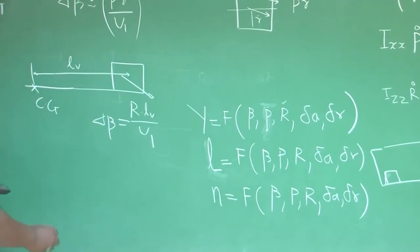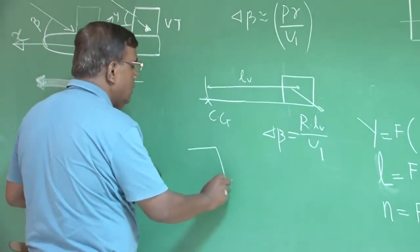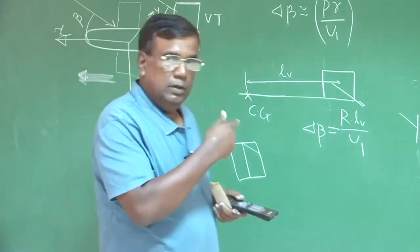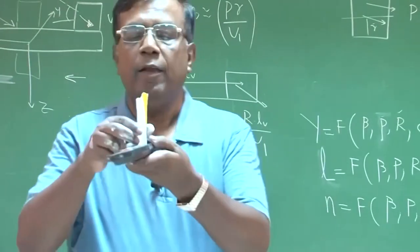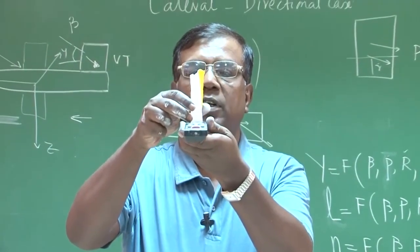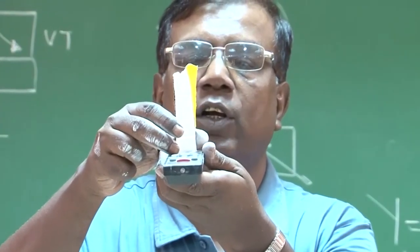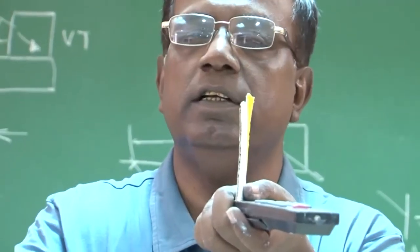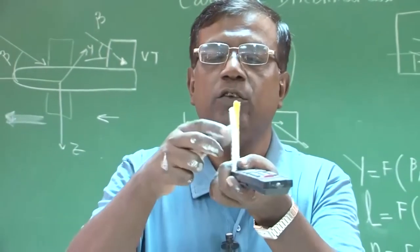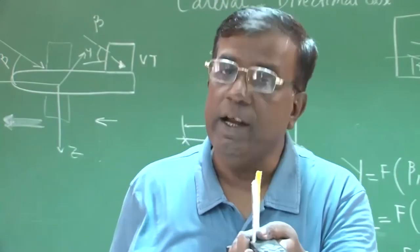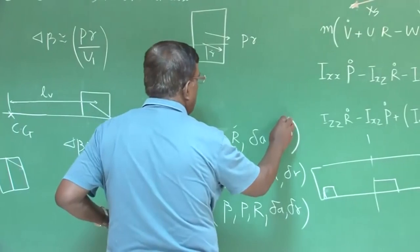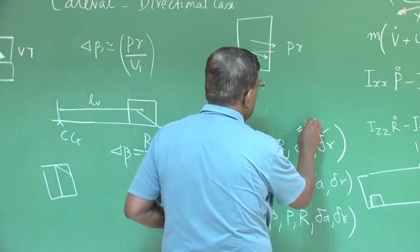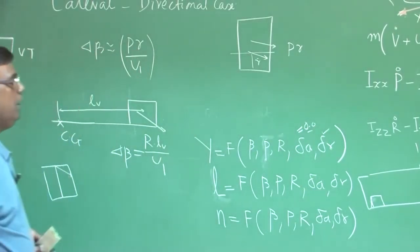Regarding rudder deflection delta_r: if the rudder is positively deflected toward the left, as the aircraft moves forward there will be a force in the positive y direction. So positive delta_r causes a side force in the positive y direction. Aileron deflection delta_a will be assumed, as a first approximation, to contribute negligible side force.